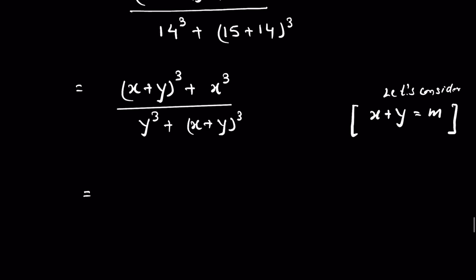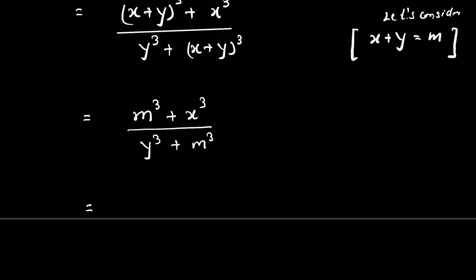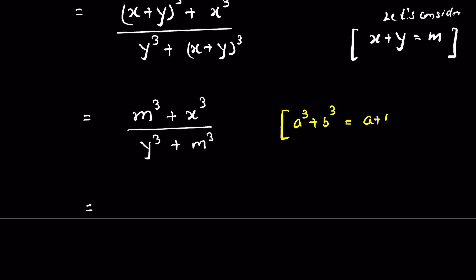Now we let m = x + y, so the expression becomes (m³ + x³) / (y³ + m³). This is in the form of a³ + b³, and we recall the formula: a³ + b³ = (a + b)(a² − ab + b²).